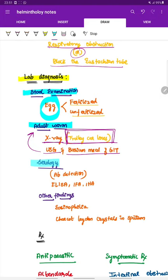Next is the serology. Serology is by antibody detection using ELISA, immunofluorescence, and immunohemagglutination test. Then the other findings include eosinophilia, Charcot-Leyden crystals in the sputum.